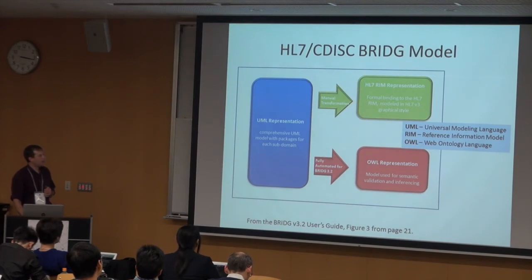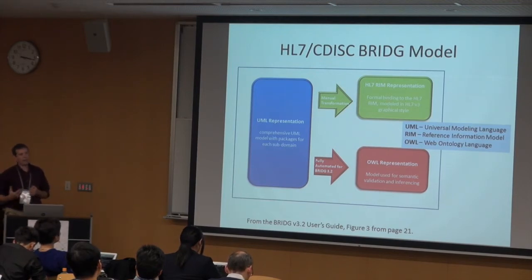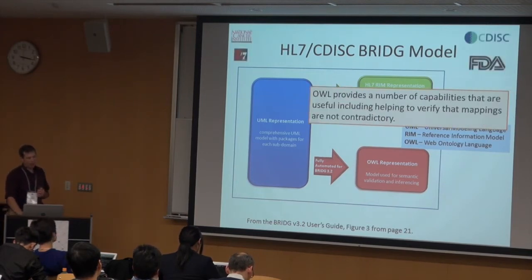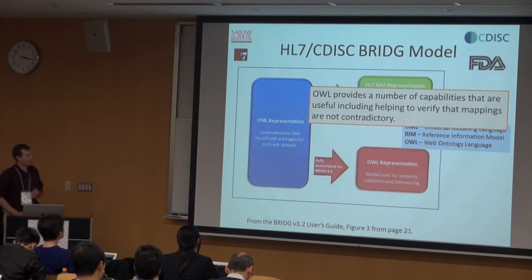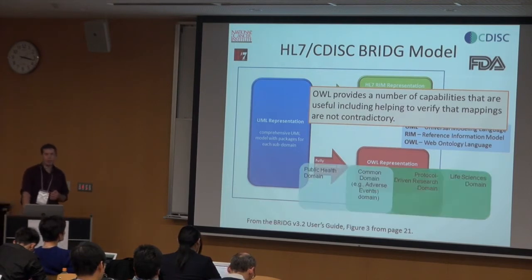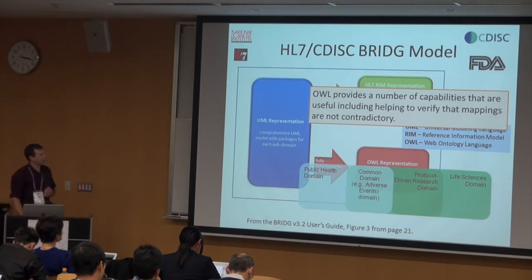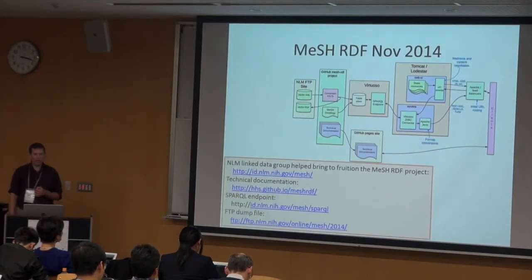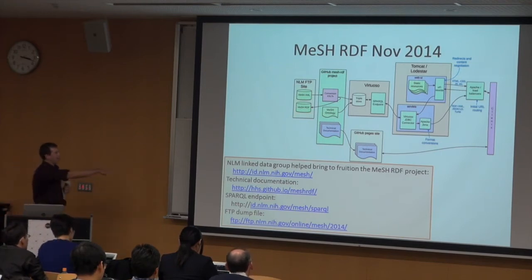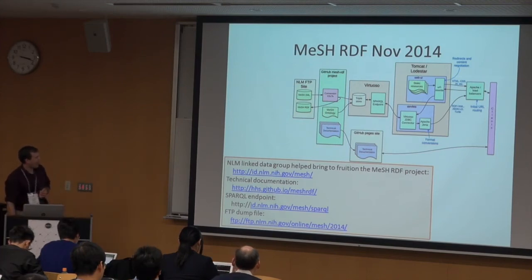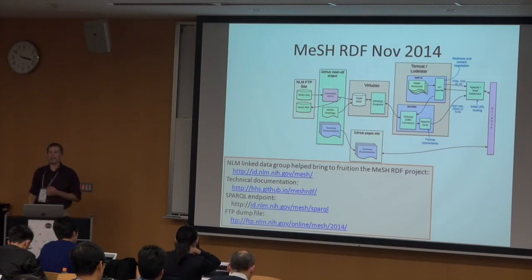RDF linked data is really coming along. I was at a workshop at the US FDA this last week, and they're trying to bring RDF into their standards. They found it's better than using UML because it provides capabilities to verify mappings. They're trying to bridge the public domain health area with the life sciences domain — for example, mining adverse event reporting data. And as of now, MeSH RDF will have been released: this is the second NLM project with RDF data, and you can access it right now.